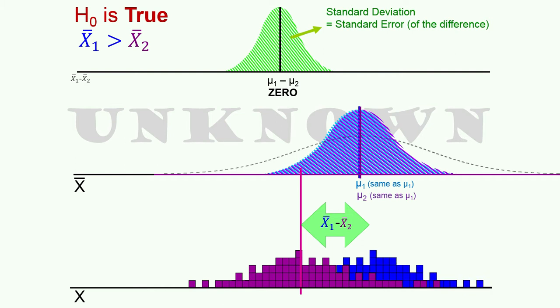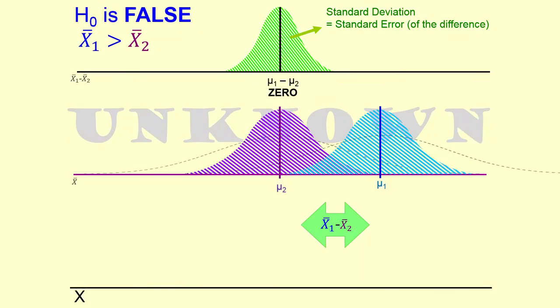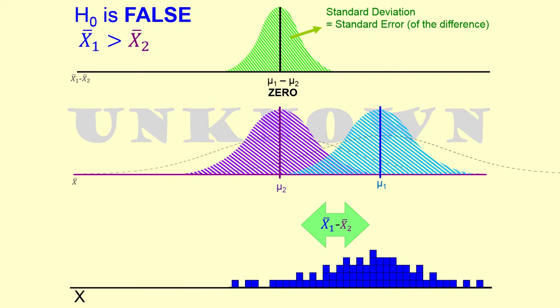Here's another situation. In this case, sample mean one is bigger than sample mean two — blue is to the right of red. The null hypothesis says they came from the same distribution. The t-observed is a positive t-observed because if you're doing one minus two, sample mean one is bigger, blue is a bigger number, two is red and smaller, so you have a positive difference between means. So your t-observed will be positive.